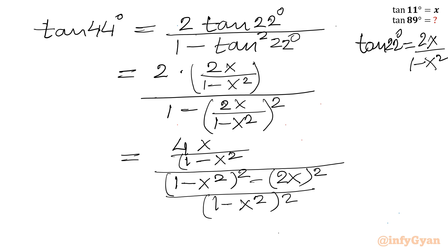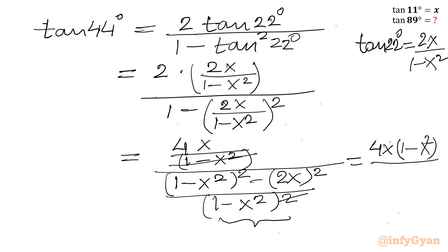Now we can cancel 1 minus x squared, so we are left with 4x in the numerator. Taking 1 minus x squared to the numerator gives us 4x times (1 minus x squared), and 2x whole squared is 4x squared. This is the value of tan 44 degrees.